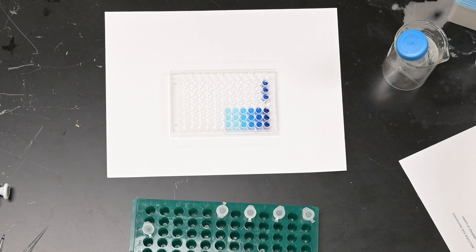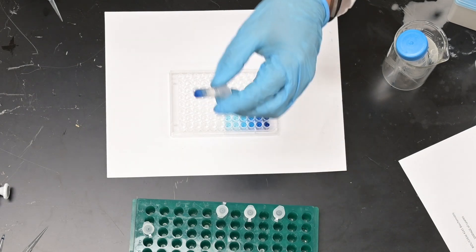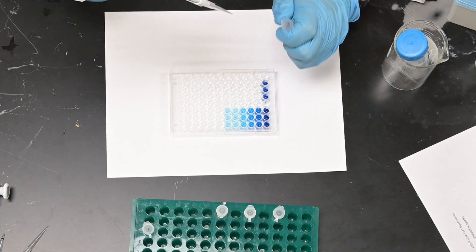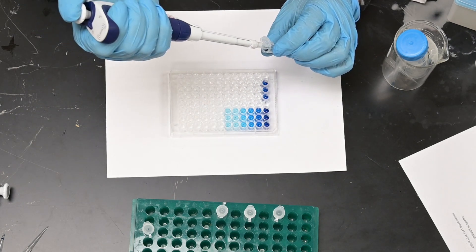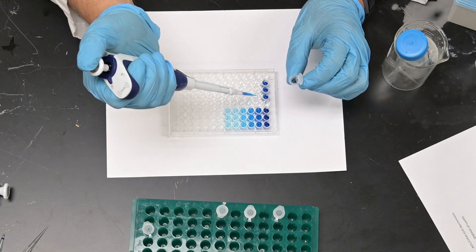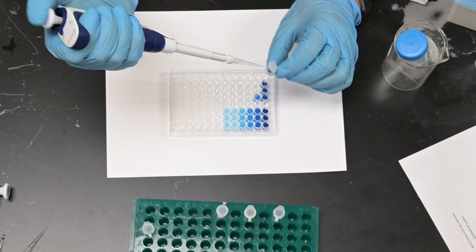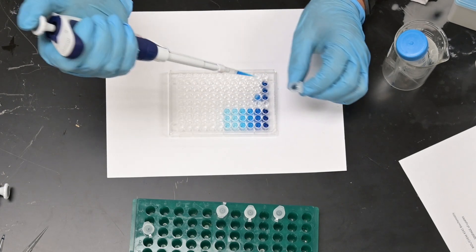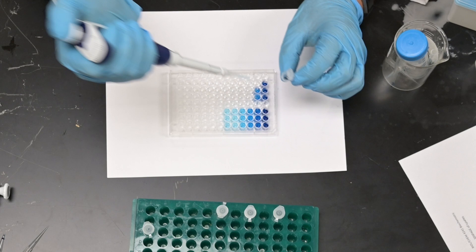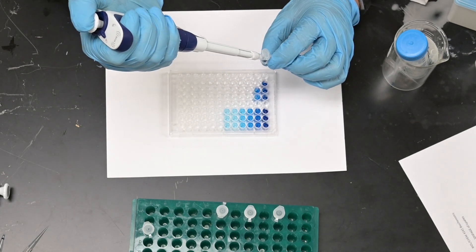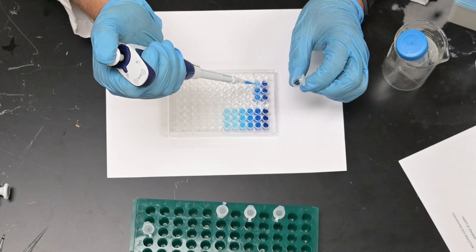Now I will take the pipette out and take the 0.5-fold diluted and add that to E2, F2, and G2.